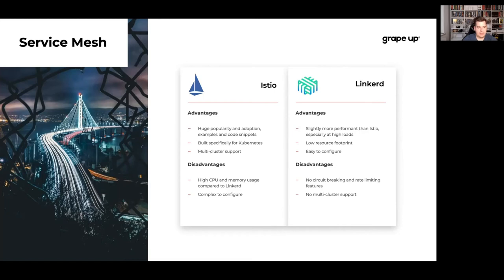For service mesh, I picked two solutions that are very similar with not many differences. Istio is the most popular service mesh right now — it has many examples, code snippets, great documentation, articles, and multi-cluster support. Compared to Linkerd, it's slightly less performant under high traffic. Linkerd was built with performance in mind — it has a very small resource footprint making it much faster for large data transfers. However, it doesn't have multi-cluster support and some Istio features like circuit breaking are missing.